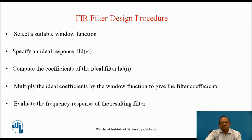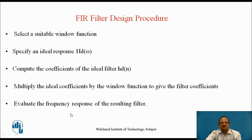The overall design procedure for the windowing method is as follows: First, select a suitable window function. Then, specify an ideal response hd(omega). Compute the coefficients of the ideal filter hd(n) by taking the inverse Fourier transform. Then, multiply the ideal coefficients by the window function to give the filter coefficients h(n). Once you have the filter coefficients, evaluate the frequency response of the resulting filter. If not satisfied, iterate by changing the filter length. This is how we design FIR filters using the windowing method.